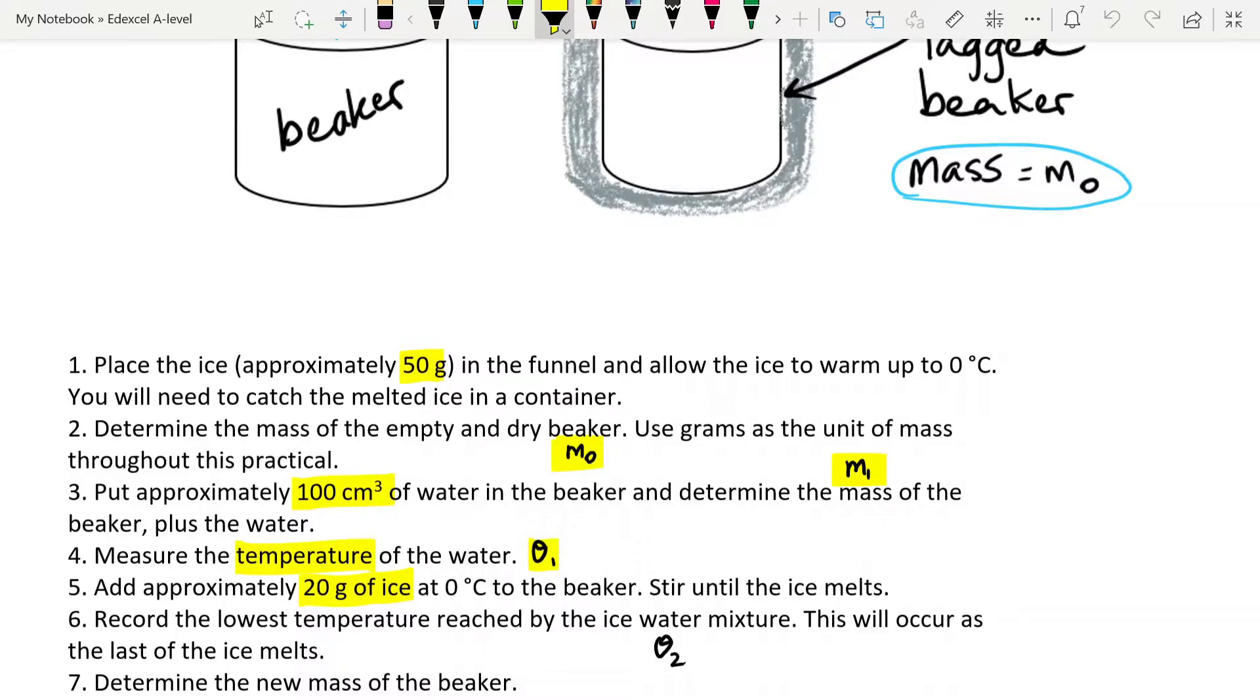So you put your 20 grams of ice into the beaker and you stir it until the ice is gone, and then you find your theta two, which is the temperature reached by the ice-water mixture. And so you should see that the temperature on your thermometer that you've moved from your funnel now into your beaker of water, that the temperature on your thermometer goes down and reaches its lowest value when all the ice has melted. And then finally you want our new mass. So we have three masses. Empty beaker, beaker plus water, and beaker plus water plus ice. And then two temperatures, original temperature of the water and temperature of the water after you've added the ice and it's melted.